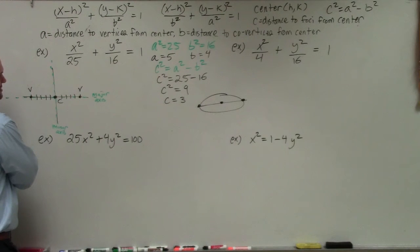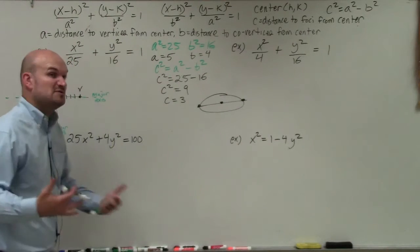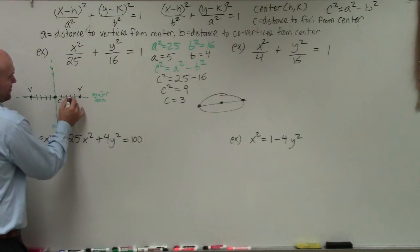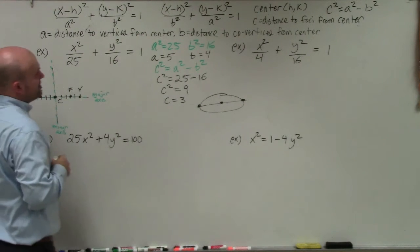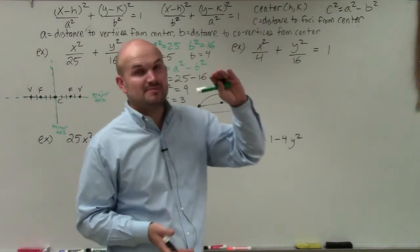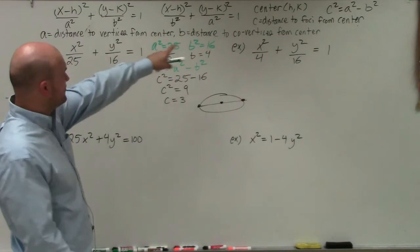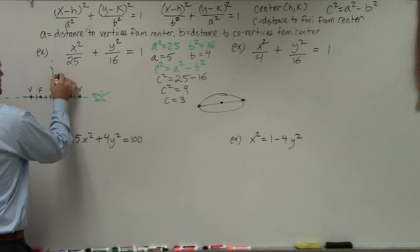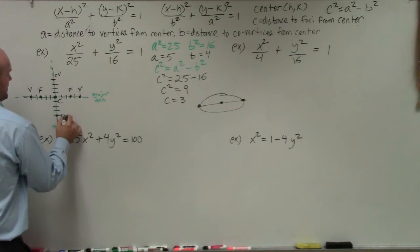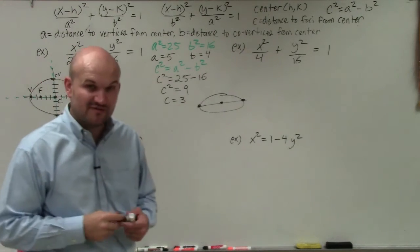The foci are a distance of C = 3 from the center, and they also lie on the major axis. So the foci are 3 units to the right and 3 units to the left. The co-vertices are perpendicular to the major axis — they're the endpoints of the minor axis — at a distance of B = 4. So go up 4 and down 4. I like to draw this on a graph so students can visualize everything clearly.